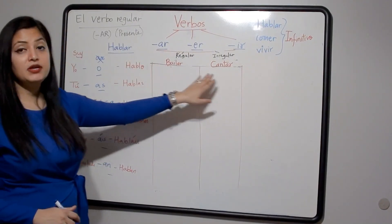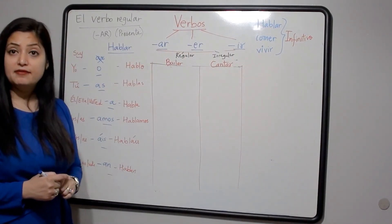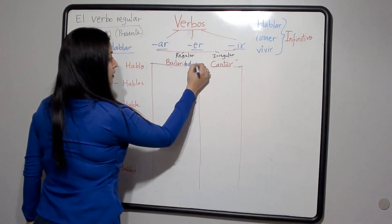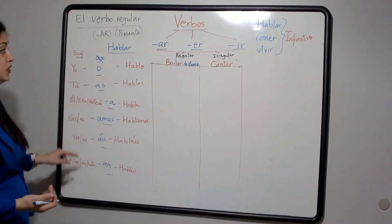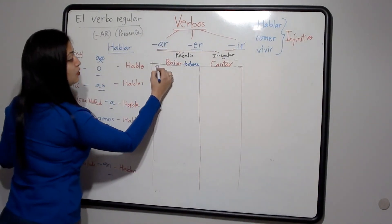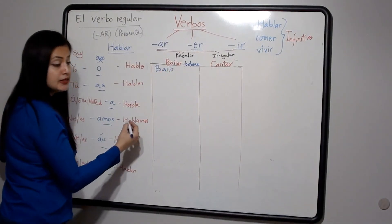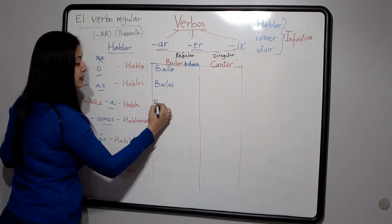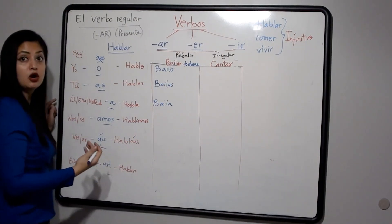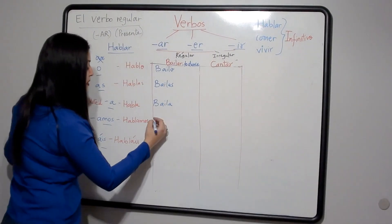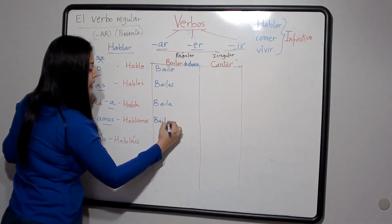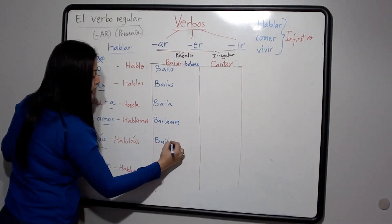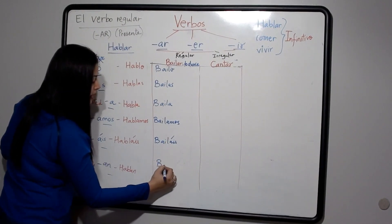Similarly, here I have written a couple more verbs to conjugate together. Bailar means 'to dance.' Following the same rule: bailo means 'I dance,' bailas means 'you dance,' baila means 'he/she/you (formal) dances,' bailamos means 'we all dance,' bailáis and bailan for 'you all' and 'they all dance.'